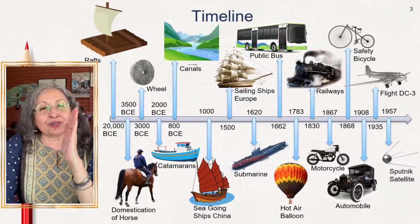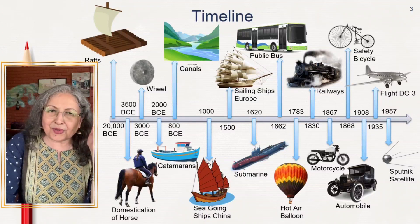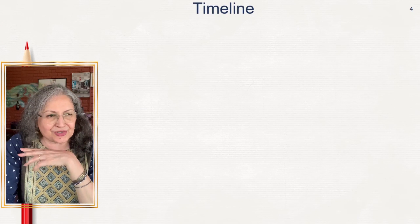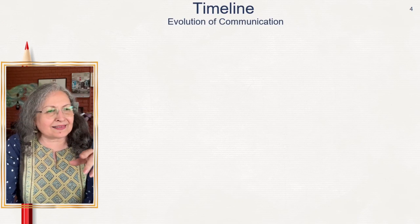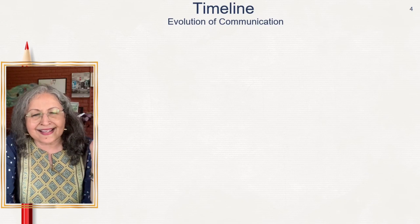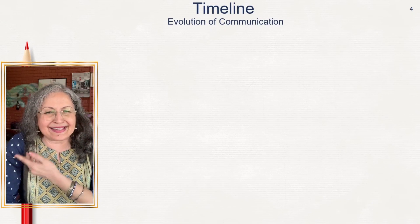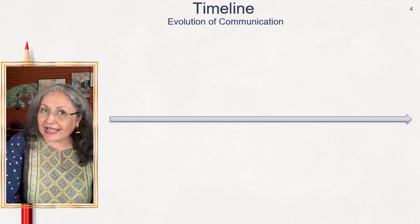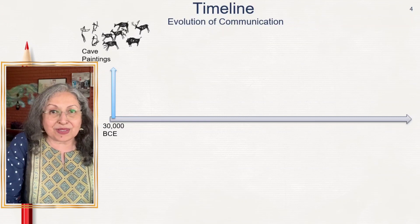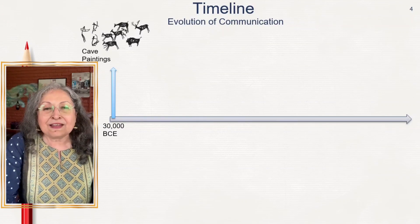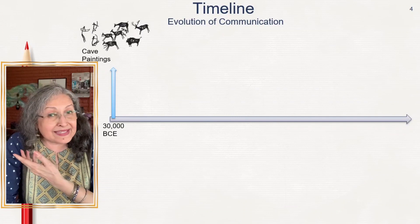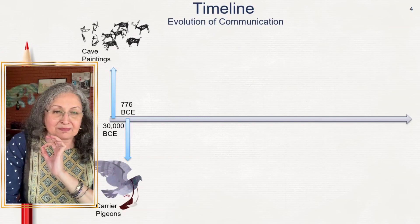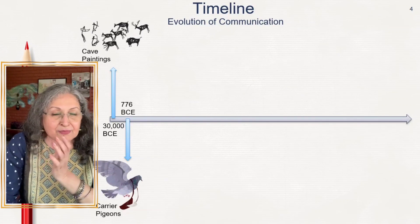The last item on the transport timeline is the satellite in 1935. I've shown you a horizontal timeline, but you can also do it vertically. Now let's look at the evolution of communication. People often think timeline means only history, but there is a history of everything. So I'll do something fun with GIFs for communication. Cave paintings were one way human beings communicated their thoughts — we have them in India, like Bhimbetka in Madhya Pradesh, and all over the world. Then came carrier pigeons around 766 BCE.